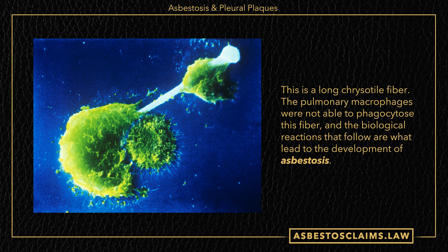Back to this picture that we saw — this was a case where a pulmonary macrophage was not able to phagocytose the chrysotile fiber, and the biological reactions that follow that frustrated phagocytosis are what leads to the development of asbestosis. Asbestosis is a disease that is progressive, which means when you get it, it's going to continue to get worse, and it affects your breathing.